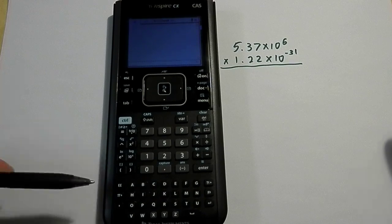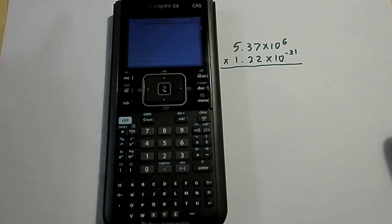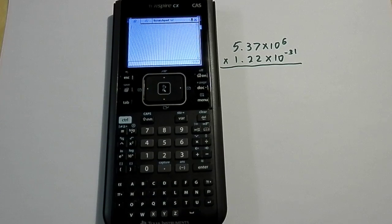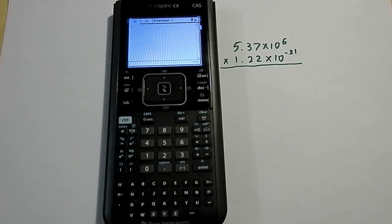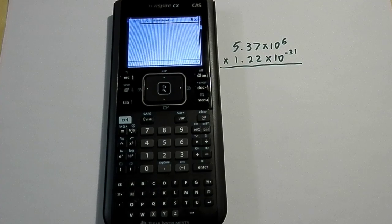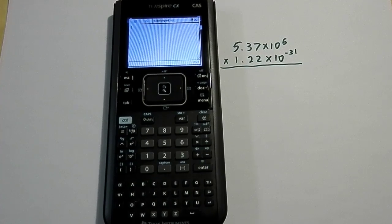So instead, what we should be using is this EE button here, because that's the one that actually forces the calculator to know that we are entering scientific notation and that what we're entering has to be treated as a single number for order of operations.